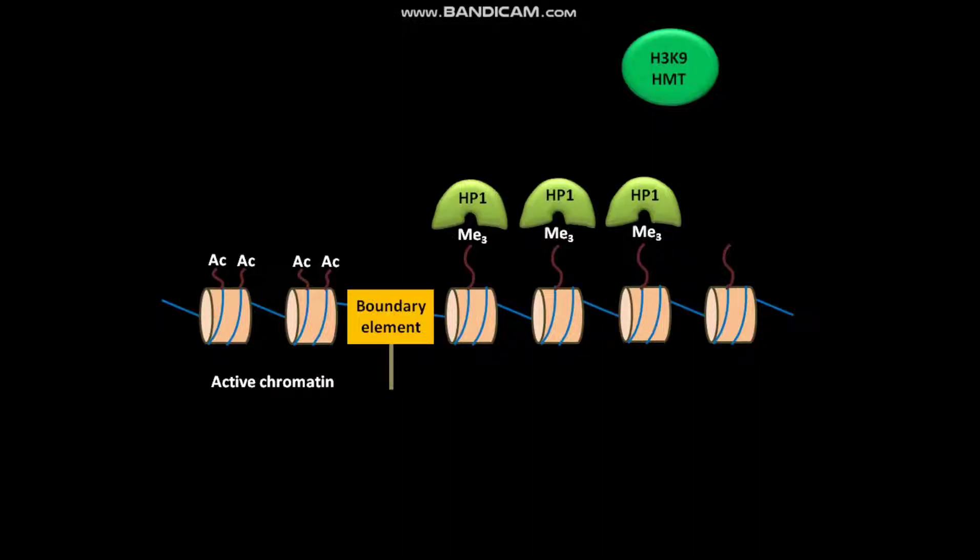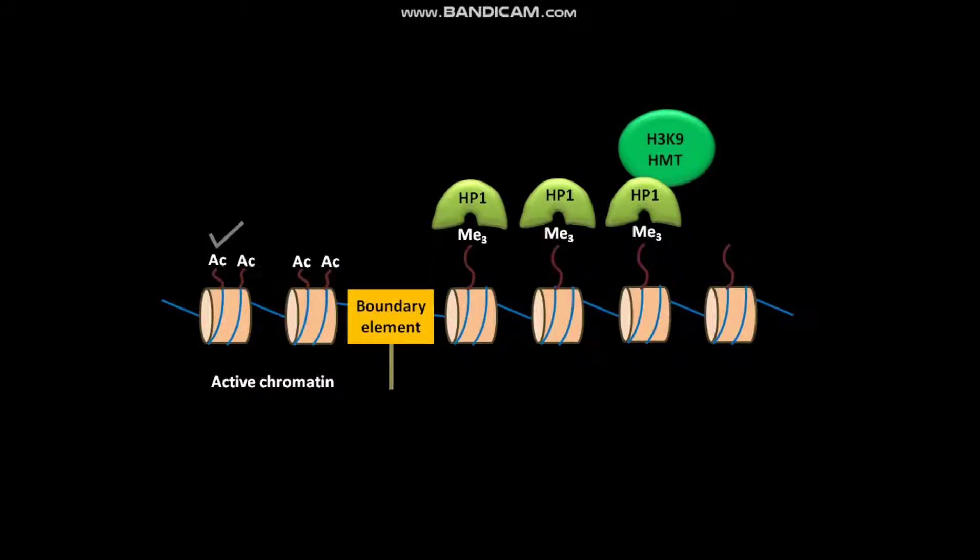The transcriptionally active chromatin is wrapped around histone H3 whose N-terminal tails are acetylated. The H3 K9 HMT or H3 lysine-9 histone methyltransferase binds to the chromo shadow domain or CSD of HP1.